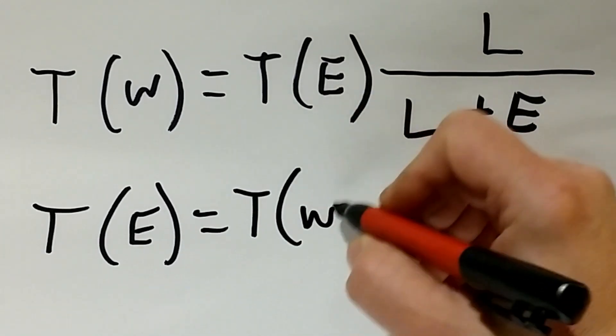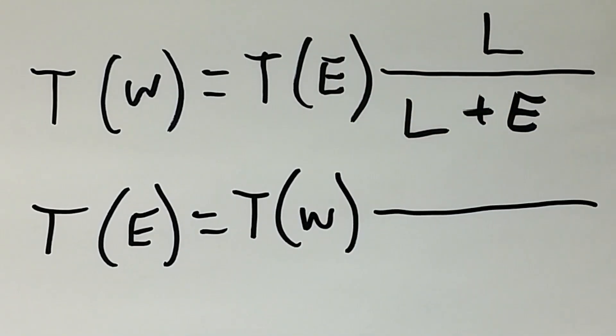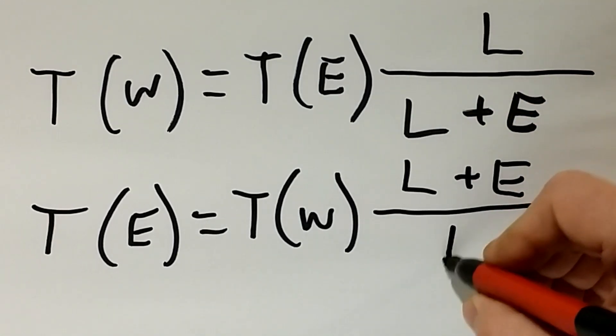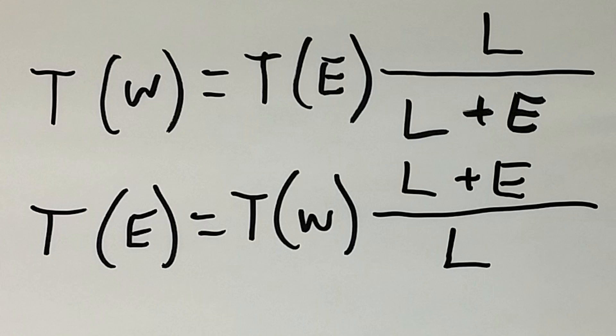Te, which is torque applied to the bolt nut, equals Tw, which is torque set on the wrench, times L plus E, divided by L, where there is only one unknown.